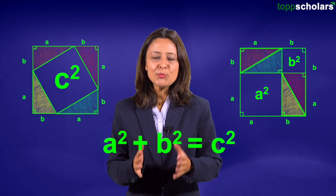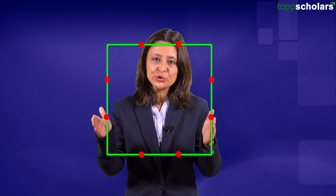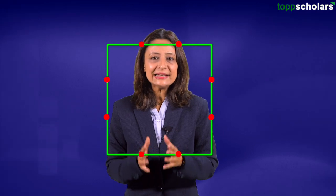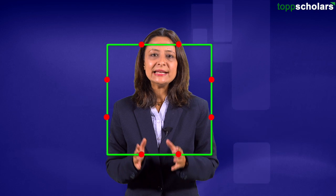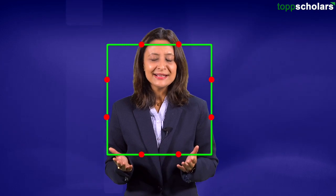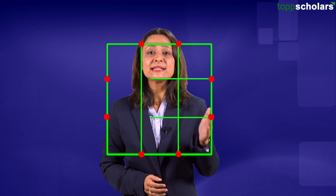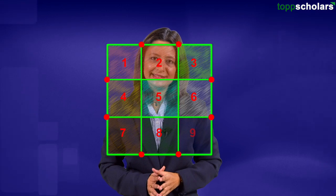Now let's look at one more proof of this theorem. For this, we need to understand a small concept. Do you know why we write the area of any figure as unit square? Let's take a square with side 3 units. By formula, the area of this square will be 9 unit square. Simple — if we join the dots, we will get 9 squares of unit length.